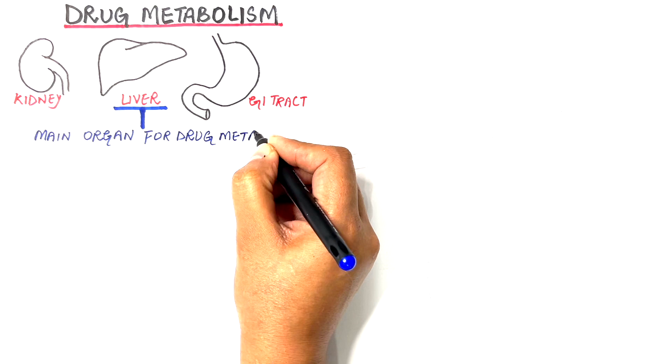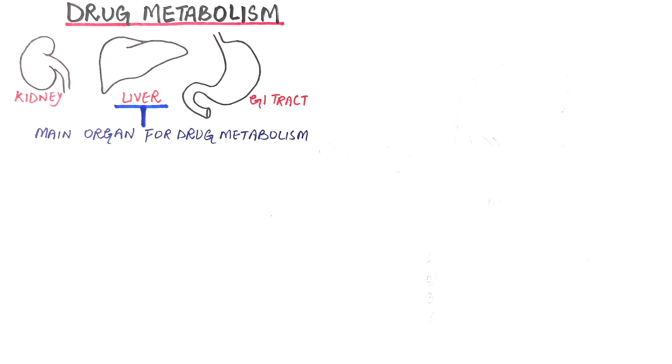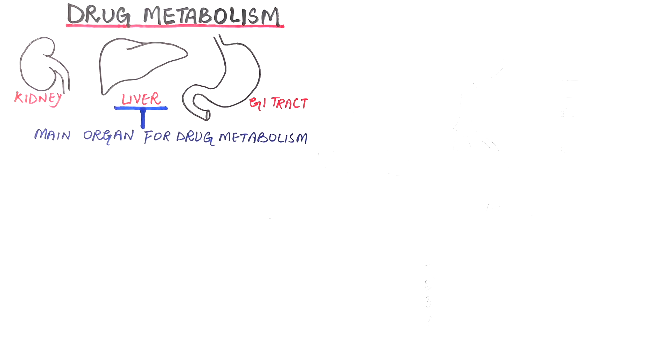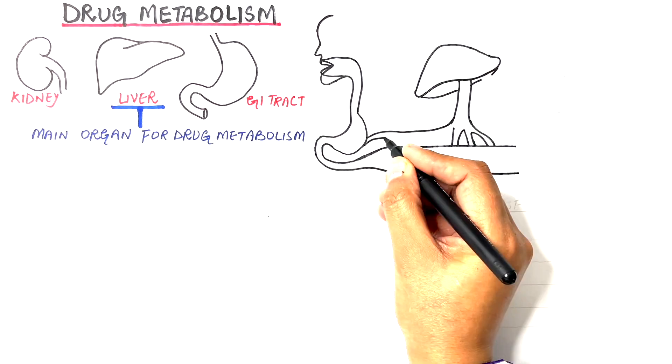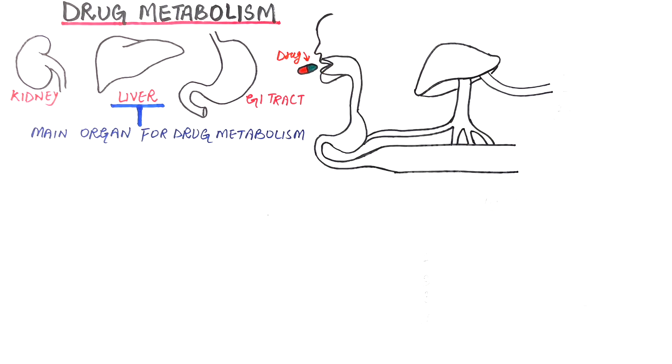Let's see how this drug reaches our liver so that the process of metabolism could take place. Drugs taken orally are picked up immediately by the liver through the portal circulation shown in blue.